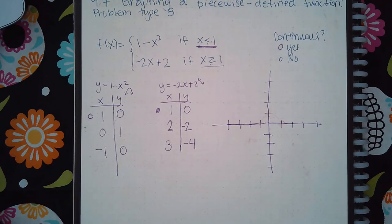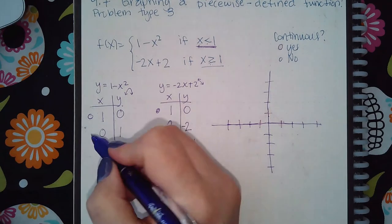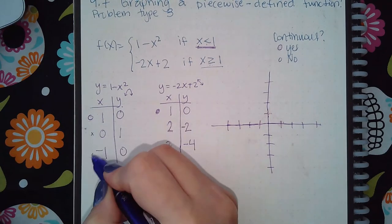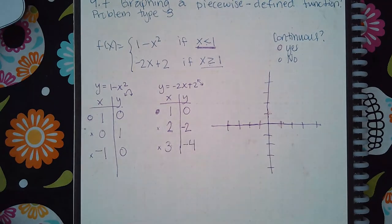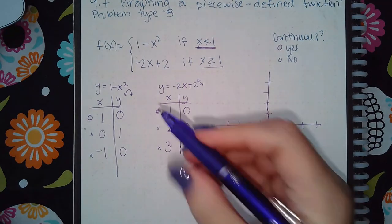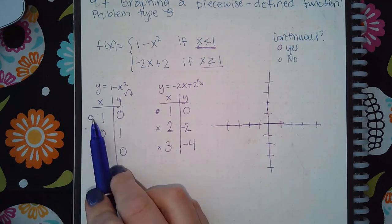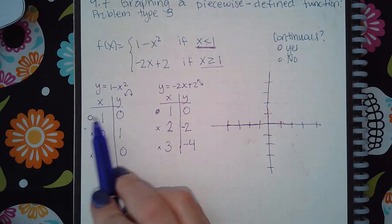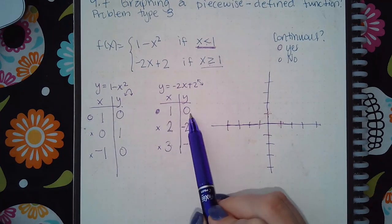Now I need to remember how ALEX functions. The open dot and the solid dot are special tools; all other points are regular and use the pencil. I'll use the open dot to plot the open circle point and the solid dot to plot the closed endpoint.